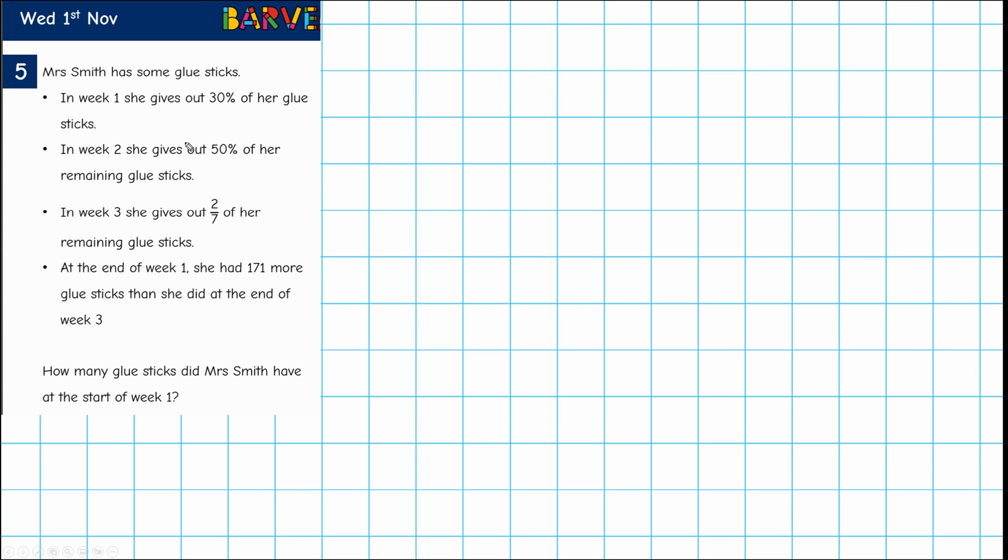In week two she gives out 50% of her, this is important, remaining glue sticks. In week three she gives out two-sevenths of her remaining glue sticks. At the end of week one she had 171 more glue sticks than she did at the end of week three. How many glue sticks did Mrs Smith have at the start of week one?